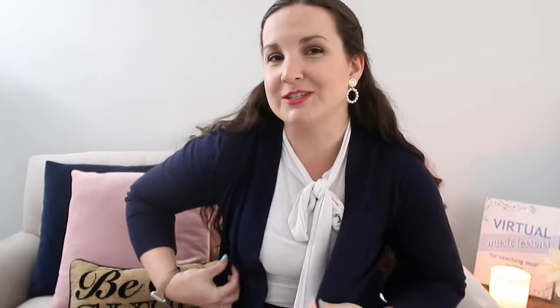Next up is Two Four Six Eight Meet Me at the Garden Gate. It goes: two, four, six, eight, meet me at the garden gate, if I'm late please don't wait, two, four, six, eight. I like to use this one to practice rhythm, especially in the spring. We do a hand clapping game: pat legs, then a double high five, clapping the rhythm on your partner's hands — meet me at the garden gate. On 'if I'm late please don't wait,' kids circle around each other, then finish on two, four, six, eight.